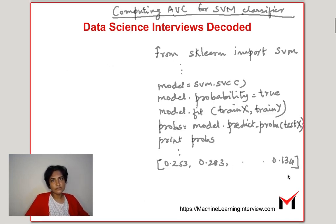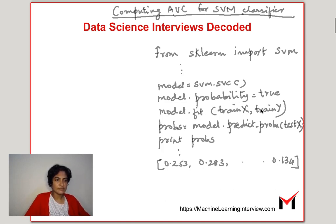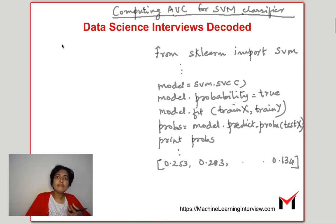Is it possible to get a distribution over classes or a probabilistic outcome from an SVM classifier? It turns out the answer is yes. Some of you might have used code like this in sklearn, where I have an SVM model with probability set to true, then fit with some training data and target values, and use model.predict_proba on test data — it will actually give probabilities from the SVM model. What's happening under the hood? There are many ways to leverage the existing model to come up with probability estimates as outcomes.